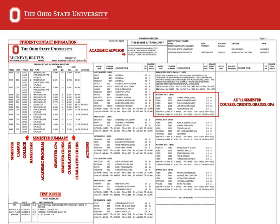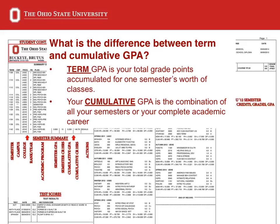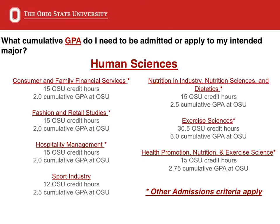So what is the difference between a semester GPA and a cumulative GPA? A term GPA is your total grade points accumulated from one semester's worth of courses, while a cumulative GPA is the combination of all of your semesters at OSU. You can view each semester's GPA and your current cumulative GPA on your advising report. While it is important to raise your GPA to a 2.0 to be in good standing at the university and meet your probation conditions, it is also important to know the GPA you must achieve to be admitted into your desired major.